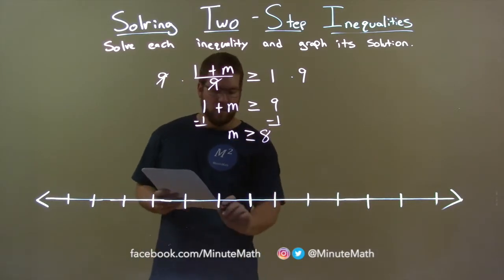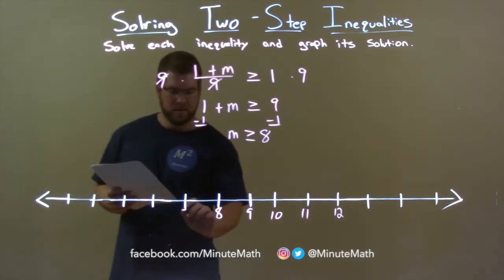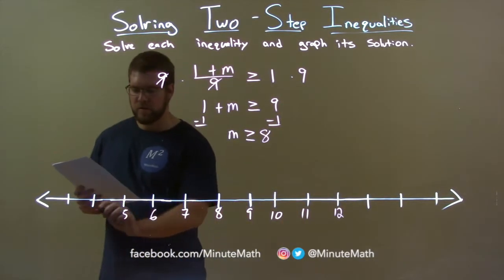So let's graph it. Put an 8 here, 9, 10, 11, 12, and 7, 6, 5, 4.